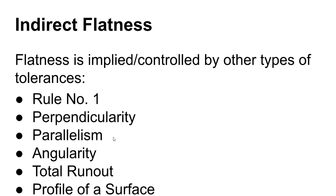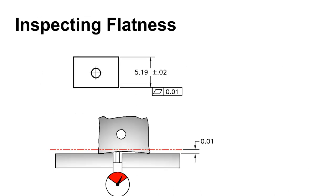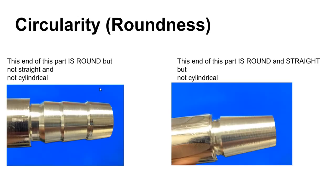You can get flatness as a result of other controls. If you ask for parallelism, the surface being evaluated has to be flat — so if you're getting indicator movement it may come from flatness. And as we've already seen from Rule Number One, the dimensions and tolerance of size control the tolerance of form of the part as well. In the flatness inspection setup, an indicator comes up through the surface so the only thing being inspected is that surface unto itself.